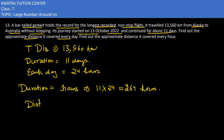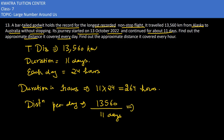Now what do we need to find? Distance per day. Distance per day would be equal to total distance — that is 13,560 — divided by 11 days. This tells us how many kilometers are traveled in one day. Dividing gives us 1,232.73 km.